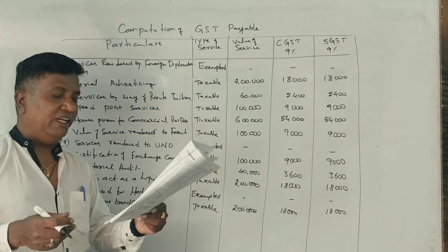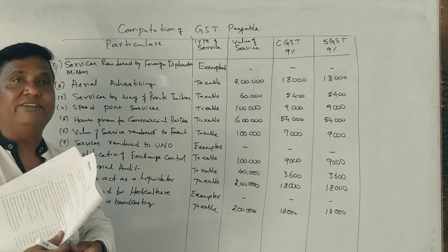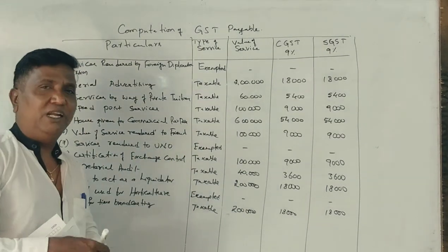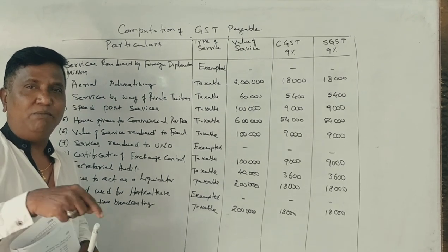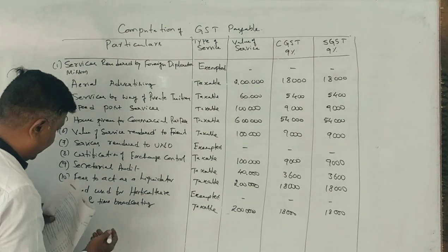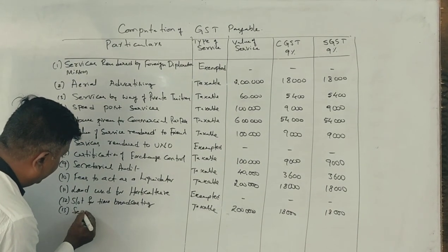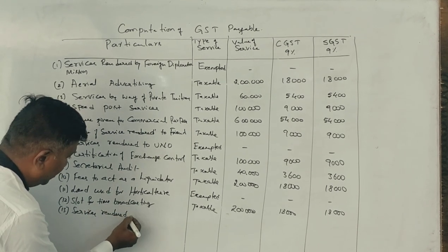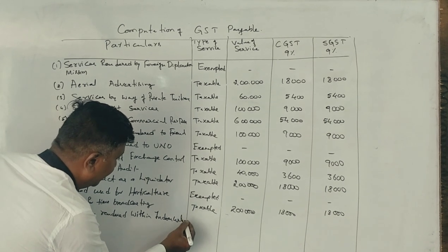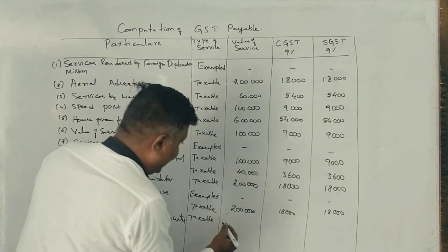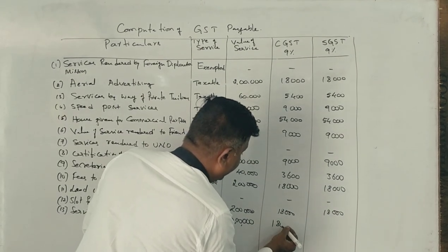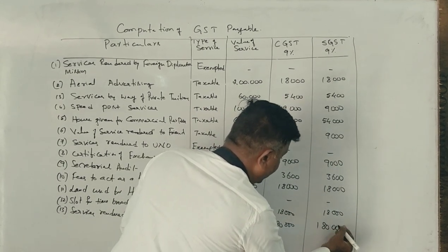Services rendered within Indian territorial waters — any services rendered within Indian territorial waters are fully taxable. Therefore, on 20 lakh rupees, 9% gives 1 lakh 80,000 CGST and 1 lakh 80,000 SGST.